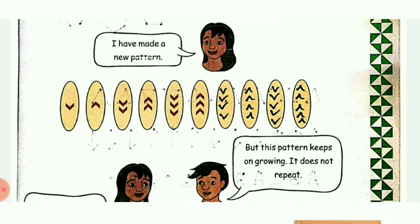The first and second have only one, the second and third have two, the third and fourth have three, the fourth and fifth have four. In the same way it is increasing. This is a growing pattern.